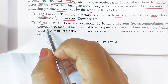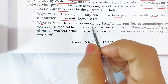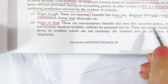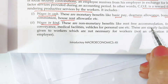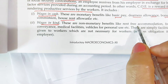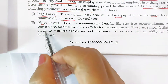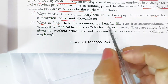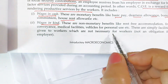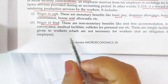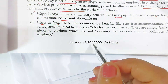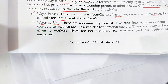Second are wages in kind — non-monetary benefits. For example, rent-free accommodation where the employer provides a house to the employee without charging rent, free conveyance, medical facilities or reimbursement, a vehicle or mobile for personal use. When these facilities are given to workers and they are not necessary for the job itself, they are part of compensation of employees.